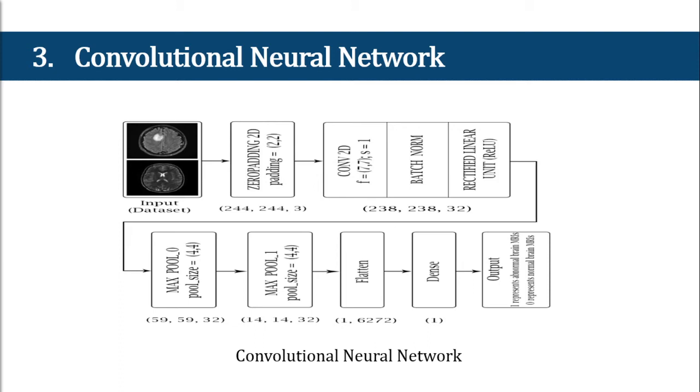And the pooling layer, that's the third layer, basically reduces the dimensionality when the images are too large. So, it converts three-dimensional volume layers into one-dimensional layers.